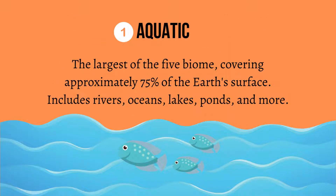1. Aquatic — the largest of the five biomes, covering approximately 75% of the Earth's surface. It includes rivers, oceans, lakes, ponds, and more.